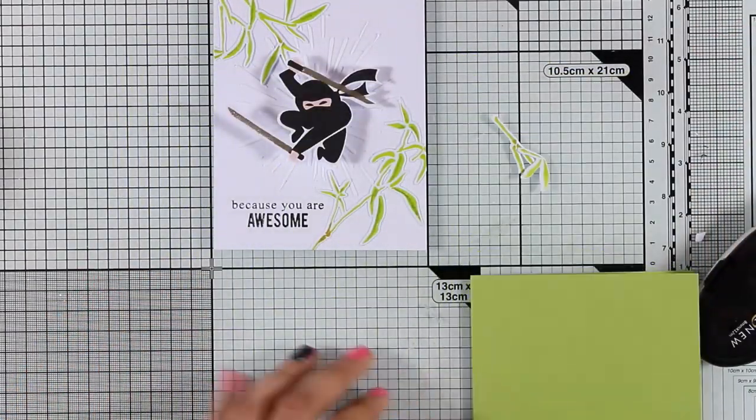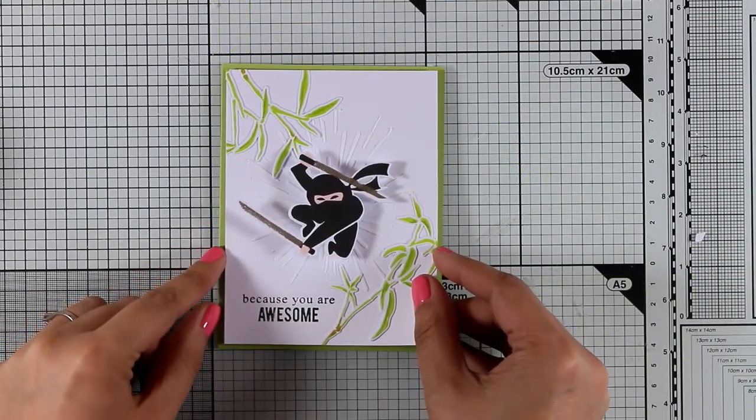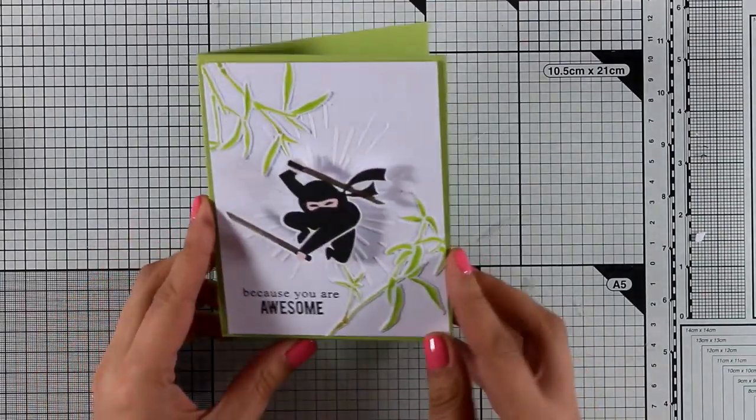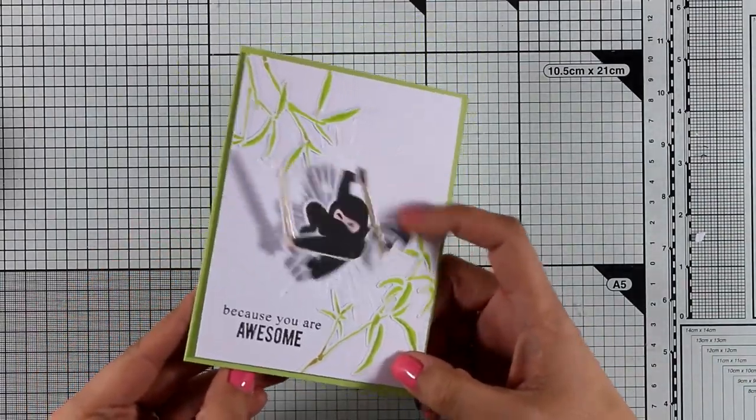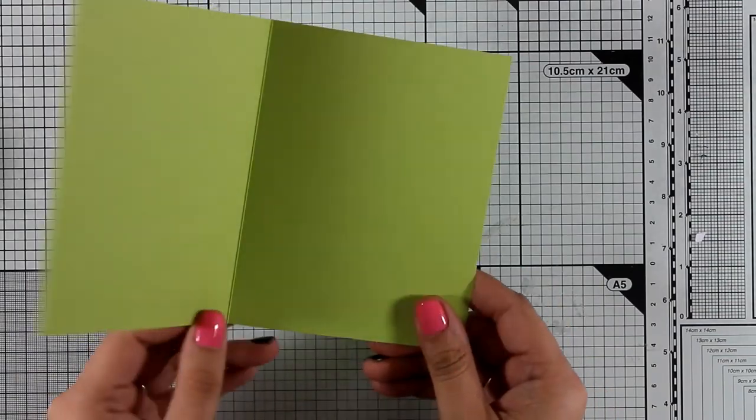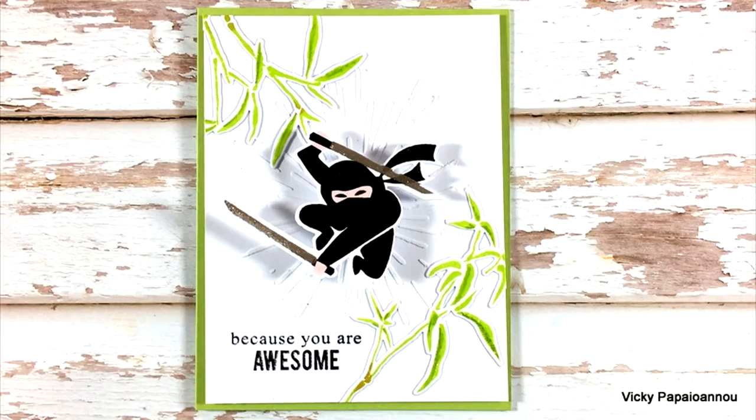I'm going to use my scissors to cut off all the excess and my panel is ready. And to finish off my card, I'm going to stick this panel on top of a standard card that's 4.25 by 5.5 inches. I'm using some foam tape at the back to add some dimension, and I picked the cardstock to match perfectly the bamboo trees.